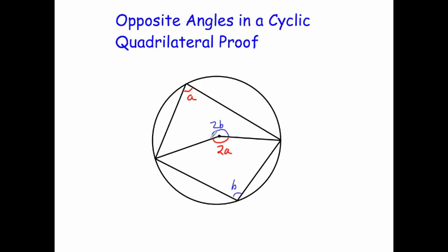Now if we focus on the centre of this circle, we've got two angles. We've got that 2A and 2B make a full circle. In other words, 2A plus 2B is equal to 360 degrees.